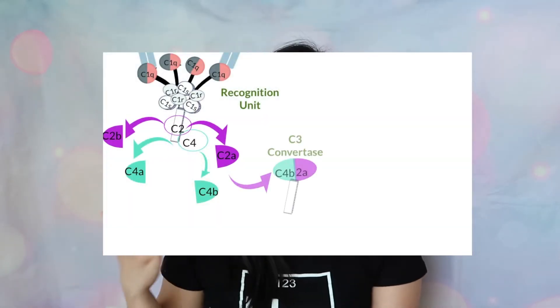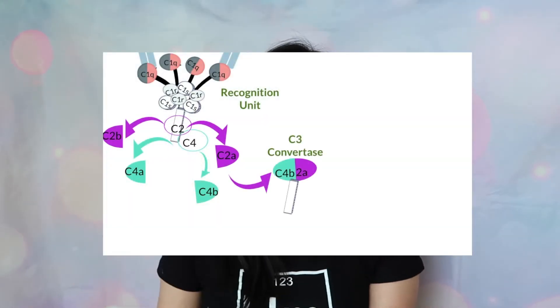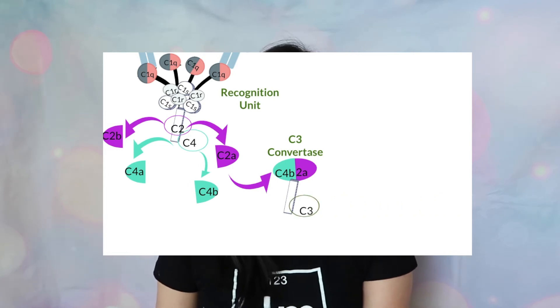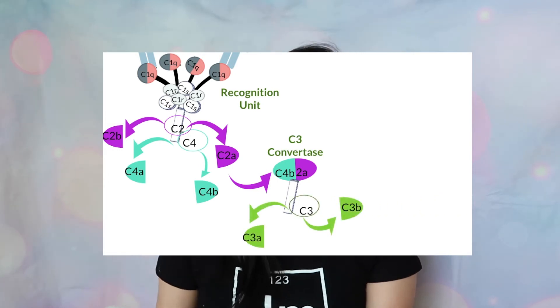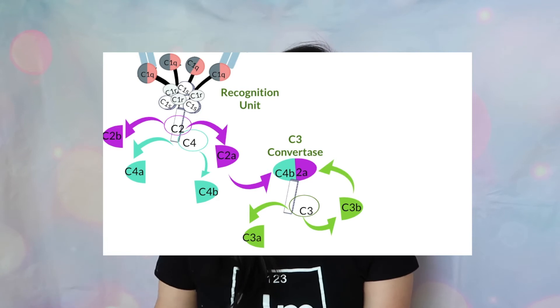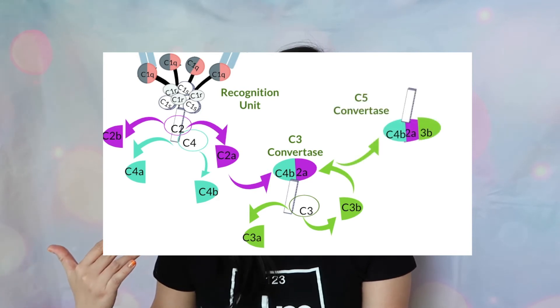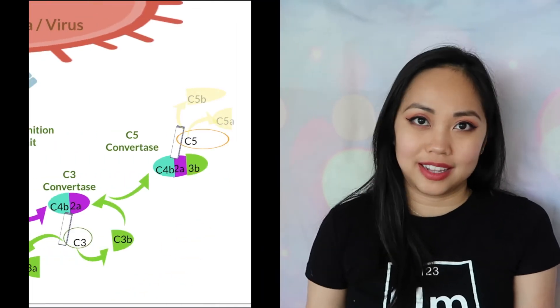Why is it called the C3 convertase? Because this unit cleaves C3 into C3A and C3B. C3B then attaches into that C4B2A complex and becomes C4B2A3B, which is known as the C5 convertase.